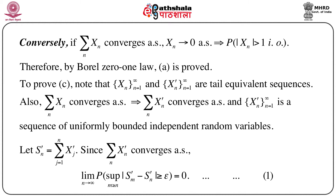Since summation x_n converges almost surely and the sequences x_n and x_n prime are tail equivalent, this implies that summation x_n prime converges almost surely. Recalling the definition of x_n prime, it is clear that x_n prime is a sequence of uniformly bounded independent random variables. Define S_n prime as the summation from j equals 1 to n of x_j prime. Since summation x_n prime converges almost surely, it follows that the limit as n goes to infinity of the probability of the supremum over m greater than or equal to n of the modulus of S_m prime minus S_n prime being greater than or equal to epsilon equals 0. Call this equation (1).